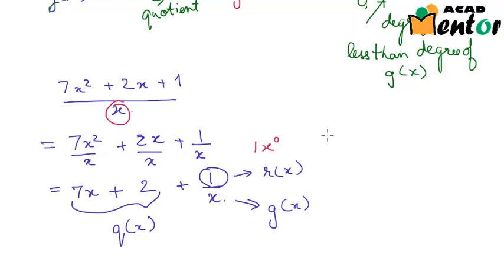So whenever I divide any polynomial by a linear polynomial — that is a polynomial with degree 1 — then I will get the remainder as a constant polynomial. We will look at the long division method for dividing two polynomials in the next video.